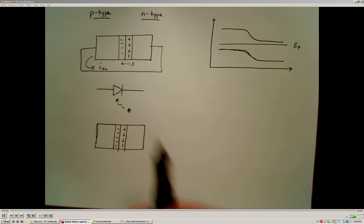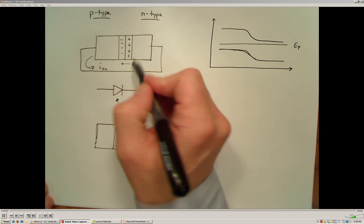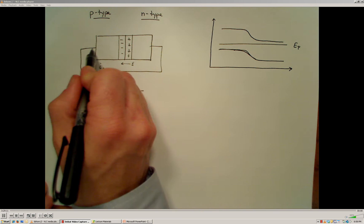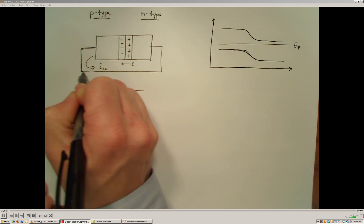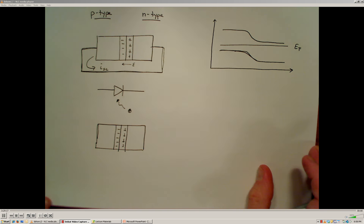So we talked about if we take a P and N type semiconductor material and join them together, we're going to get this electric field established between the junction of the two of them. And what we're going to do is look at what happens if we connect the two ends, the anode and the cathode of our photodiode together with a wire.